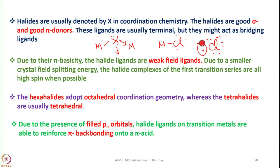Among the remaining three lone pairs, one can form a sigma bond and the other two can form pi bonds. Due to pi acidity and having low-energy filled sigma and pi orbitals, halogens can show up to a coordination number of four — meaning they can act as eight-electron donors or four pairs of electrons. We have examples in our own research, which I shall show you as you progress through this lecture.